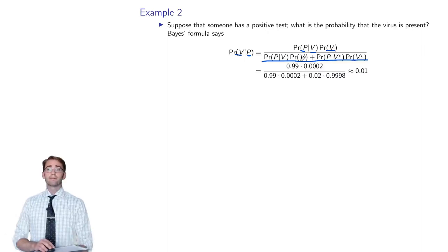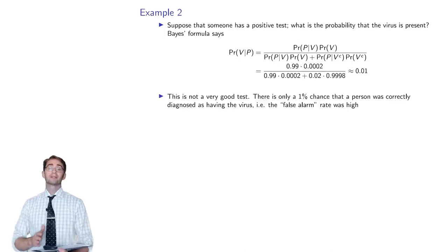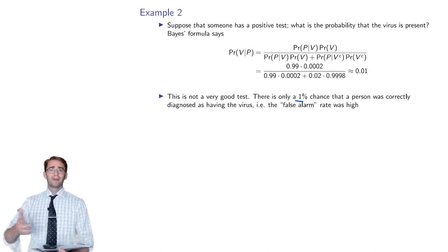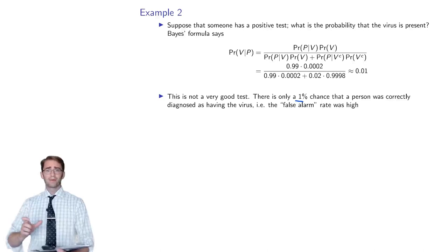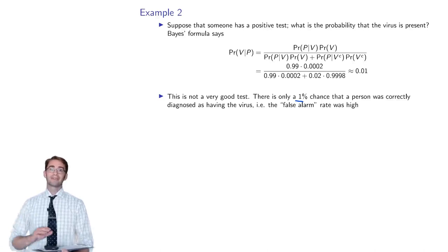Plugging in the numbers, we get 0.01. So if you get a positive test, there's still only a 1% chance you actually have the virus. The false positive rate is really high. The reason is that with a 1% false positive rate in a country of 200 million, you'd expect 2 million erroneous positive results, whereas there are only 40,000 people who actually have this virus. The false positives dwarf by well over an order of magnitude the number of people who actually have it.